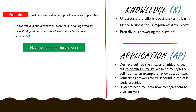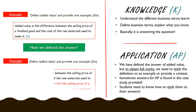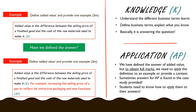For now, let's look at this question and how we answer it with application as well. The knowledge part remains the same: added value is the difference between the selling price of a finished good and the cost of raw materials used to make it. For example, increasing the selling price of a pen to reflect its attractive packaging and new functions that other pens could not do — and therefore added value is demonstrated by giving that example. With an example, it makes it clearer, and the question did ask you to provide one. That is the application portion of the question.